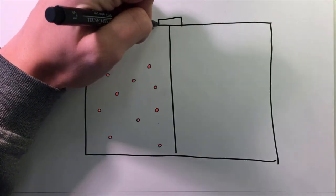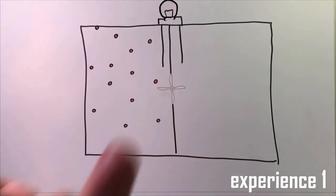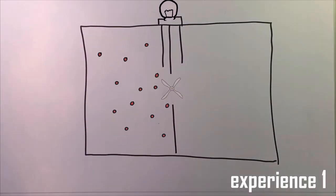Gas particles move freely, randomly, and spread over the whole space. Some of them go through the propeller to the other side of the system, allowing the bulb to light up. Some eventually come back to the other side, some just stay there.